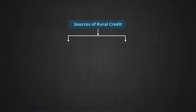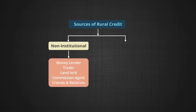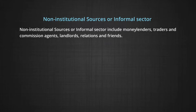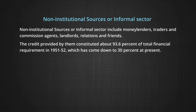Sources of rural credit are broadly classified into two categories. Number one, non-institutional sources or informal sector. Non-institutional sources include money lenders, traders and commission agents, landlords, relatives, and friends. The credit provided by them constituted about 93.6 percent of total financial requirements in 1951-52.